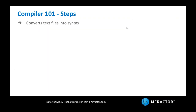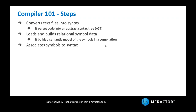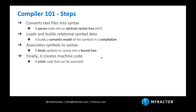How does a compiler do this? It has four distinct steps. First, it converts text files into syntax — something the compiler can understand. This is called the parsing step: it parses code into an abstract syntax tree, abbreviated AST. Next, it loads and builds relational symbol data — the semantic model. Then it associates that symbol information to the syntax from step one; this is called the binding step, binding symbols to syntax into a bound tree. Lastly, it generates code — called emitting — emitting code that can be executed.